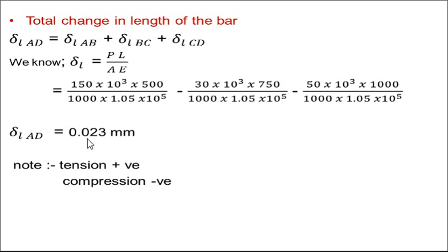If tension is present, a positive sign is taken, and for compression a negative sign is used. You can also take the opposite sign convention for tension and compression; depending on your choice, the final value will be the same.